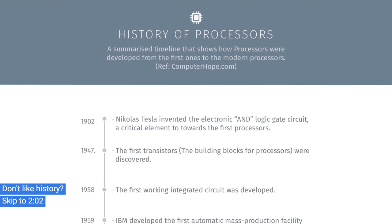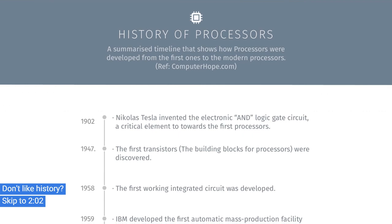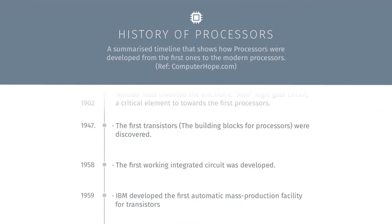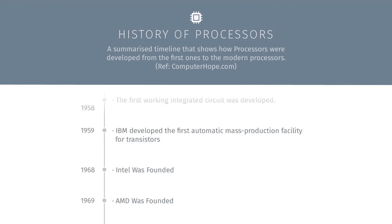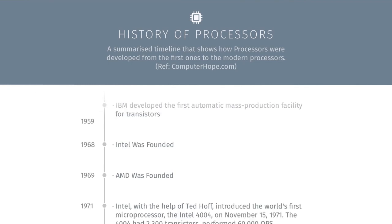So in 1902, Nicholas Tesla invented the first electronic AND logic gate. The first transistor was then discovered about 40 years later. Transistors as you know are the building blocks for processors. In 1958, the first working integrated circuit was developed. Soon later in 1959, IBM developed the first automatic mass production facility for transistors.